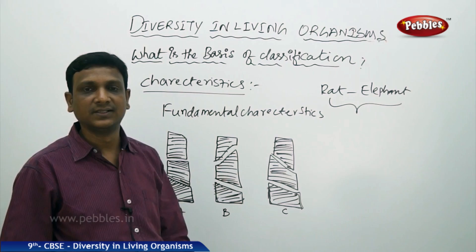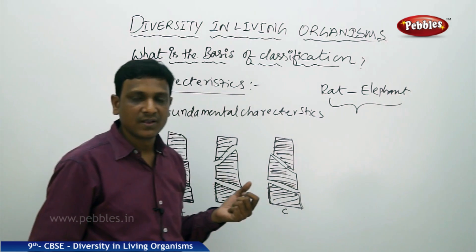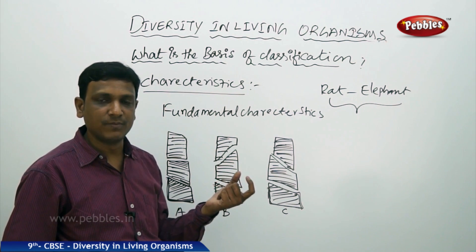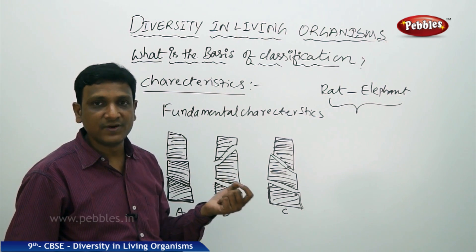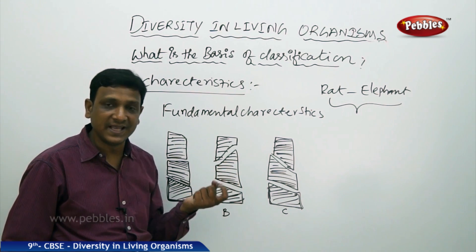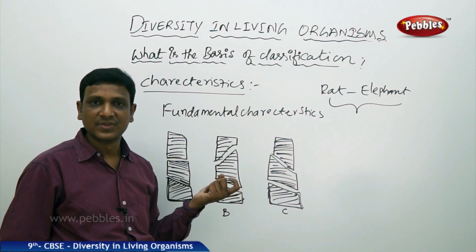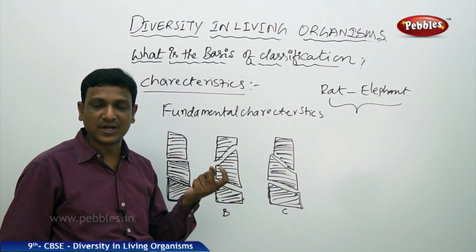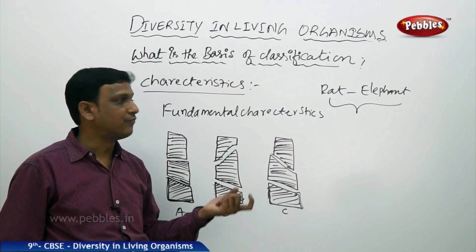Why are elephant and rat both called mammals? Because both give birth to young ones. Rats feed young ones with milk; elephants also feed young ones with milk. Rats have hair on their body; elephants also have hair. Rats have red blood; elephants also have red blood. Rats have a digestive system with similar parts to the elephant. Rats have different teeth to cut and chew food; elephants also have teeth to cut and chew food. In this way you find many similarities.